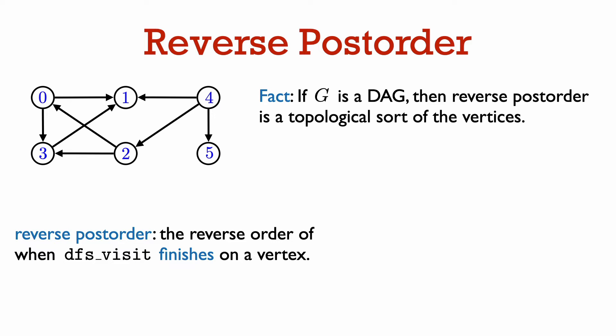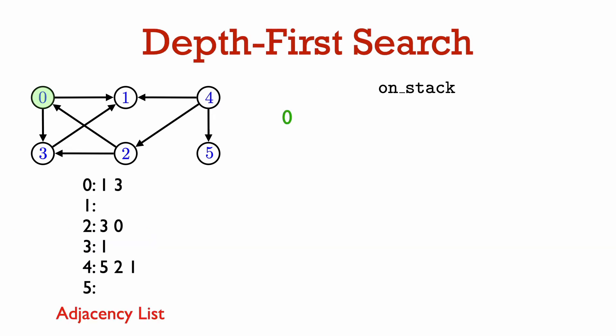Let's first look at an example and then see why this fact is true. We'll do depth-first search on this graph. The path we take in depth-first search depends on the order in which we consider vertices in the for loop of DFS visit, which in turn depends on the exact representation of the graph by an adjacency list. To be explicit, here is the adjacency list we're going to use for this example. We'll keep track of when we start visiting a vertex and when we finish visiting a vertex. A vertex number appears in green when we start visiting it and in red when we finish. Initially, all vertices are unmarked, and in the outer loop of DFS we go over vertices in order, starting from zero.